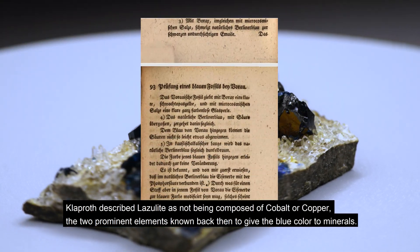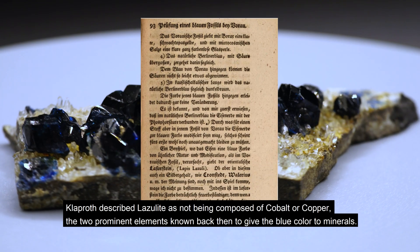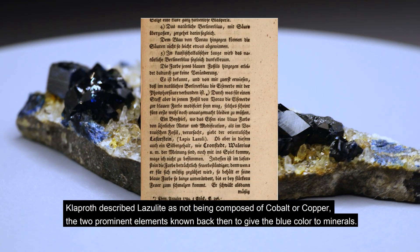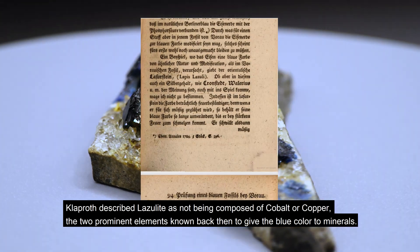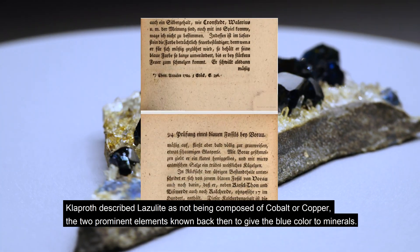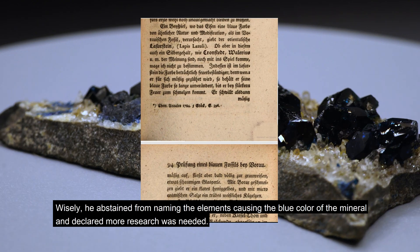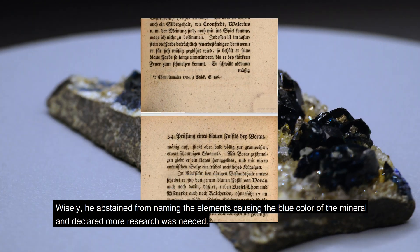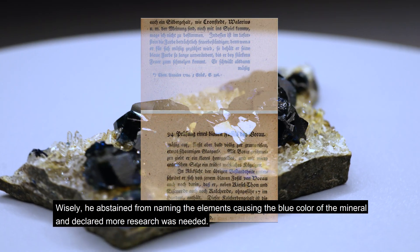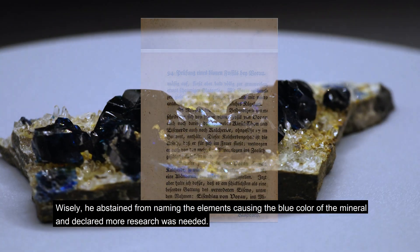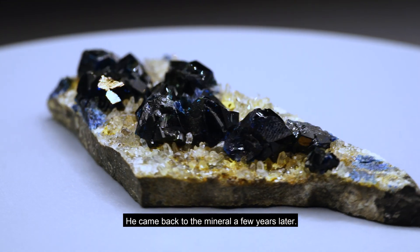Klaproth described lazulite as not being composed of cobalt or copper, the two prominent elements known back then to give the blue color to minerals. Wisely, he abstained from naming the element causing the blue color and declared more research was needed. He came back to the mineral a few years later.